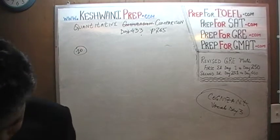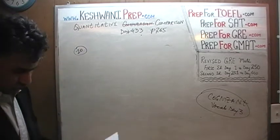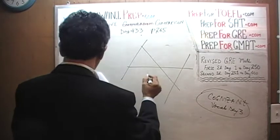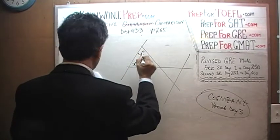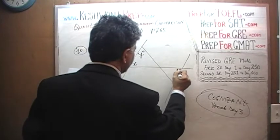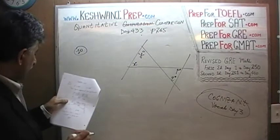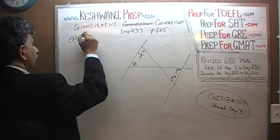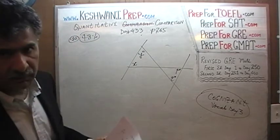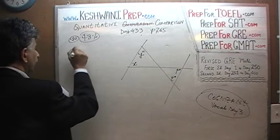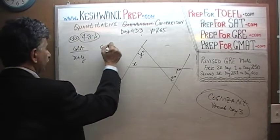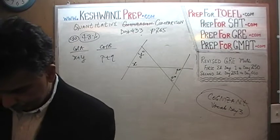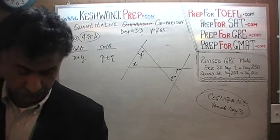Question number 10 is a geometry question. We are given two triangles sharing a vertex, with angles labeled X degrees and Y degrees in one triangle, and P degrees and Q degrees in the other. Number 10 was only 48% correct — half the people who took the exam had trouble with it. We are asked to compare Column A: X + Y versus Column B: P + Q. Pause the video and do it yourself.